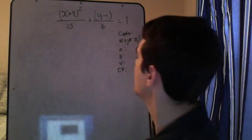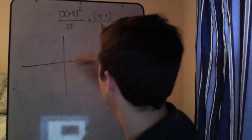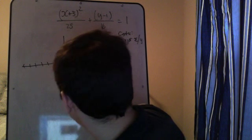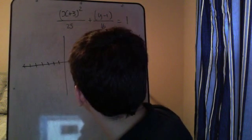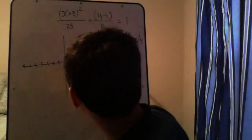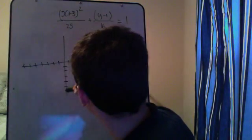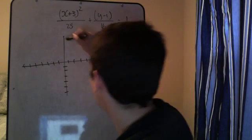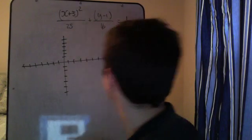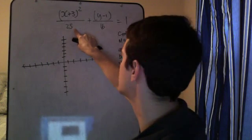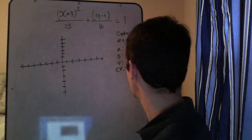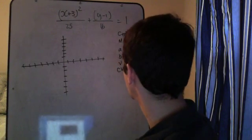Set. Center. Okay. So a is, a squared if you notice, is 25. And b squared is 16. So taking the square root of each of those will give you a and b. And remember, a is, a is always, a squared is always larger than b squared. So a will be 5. And b will be 4.